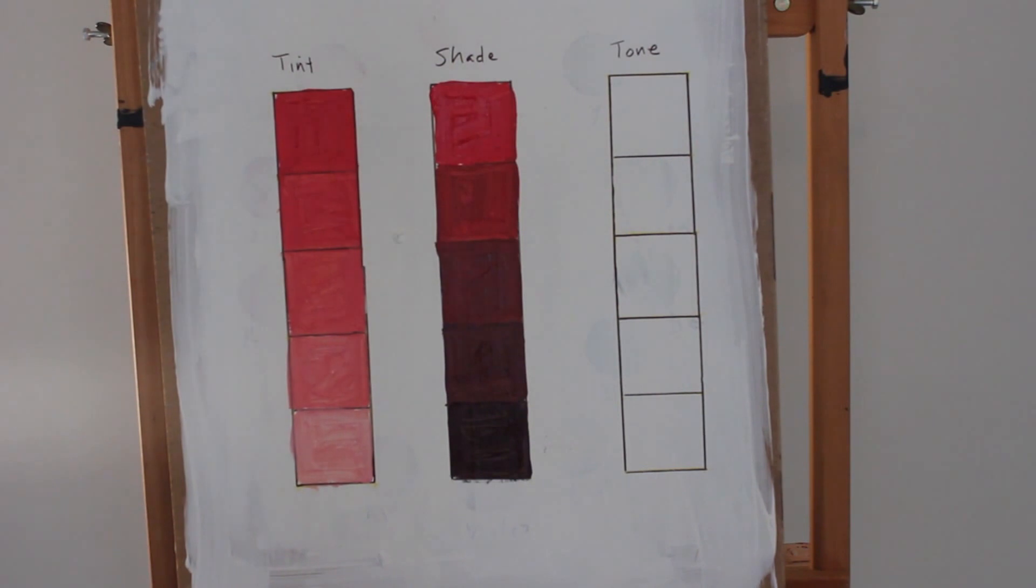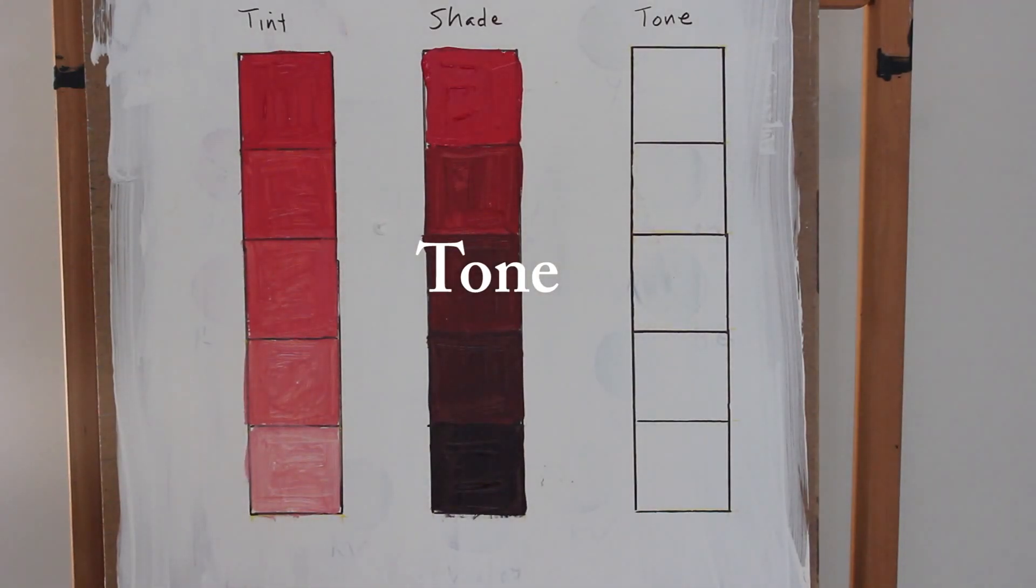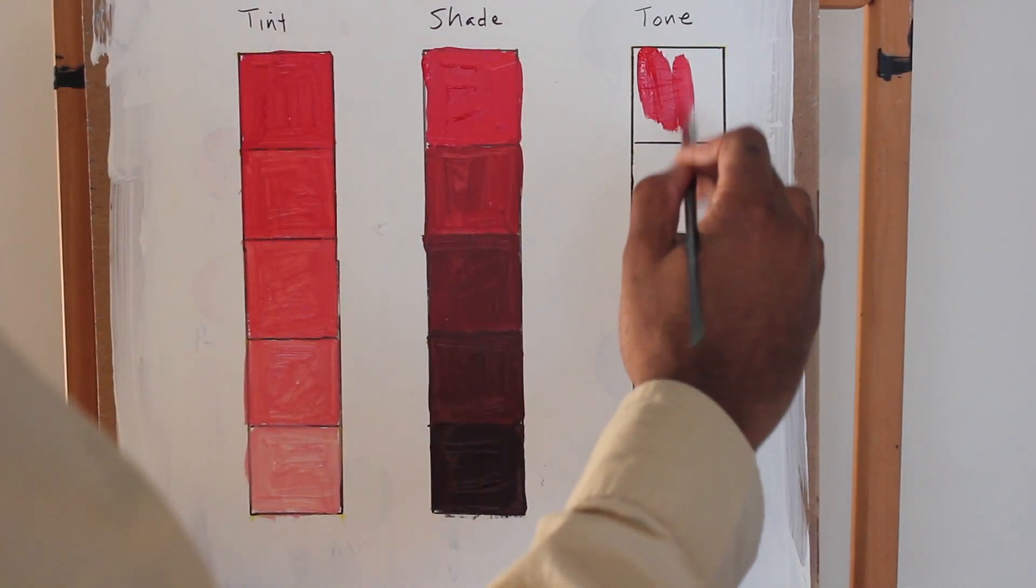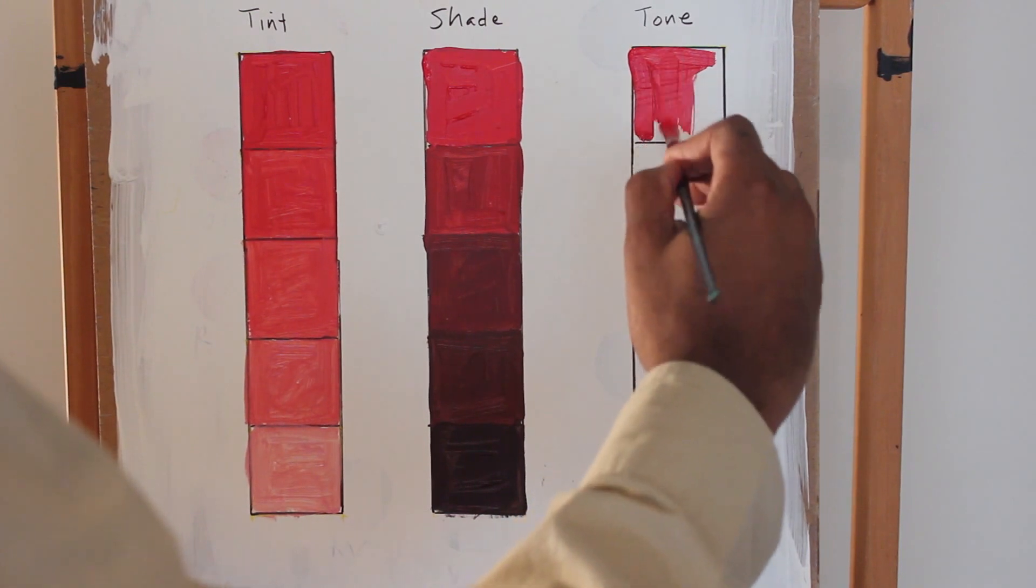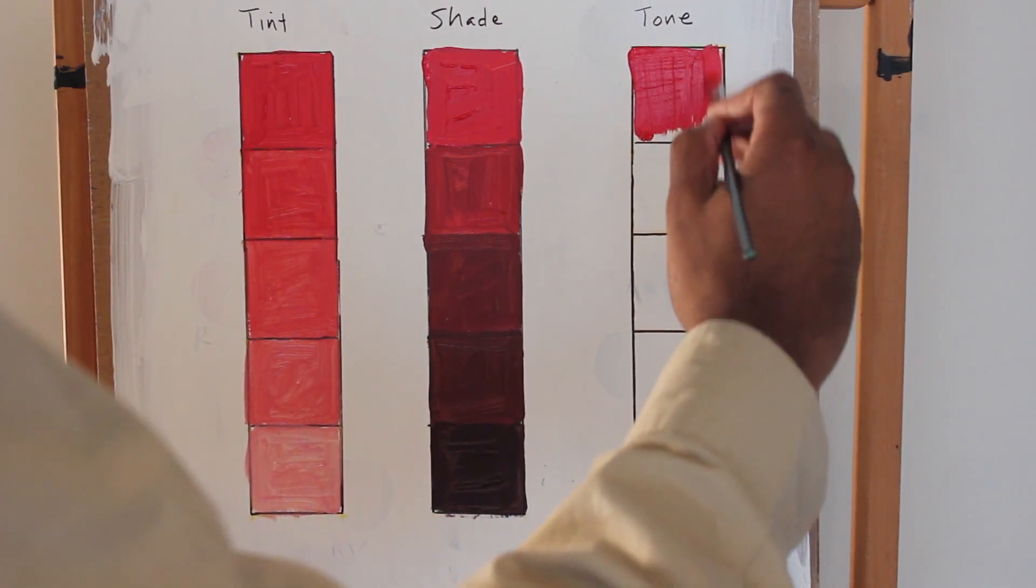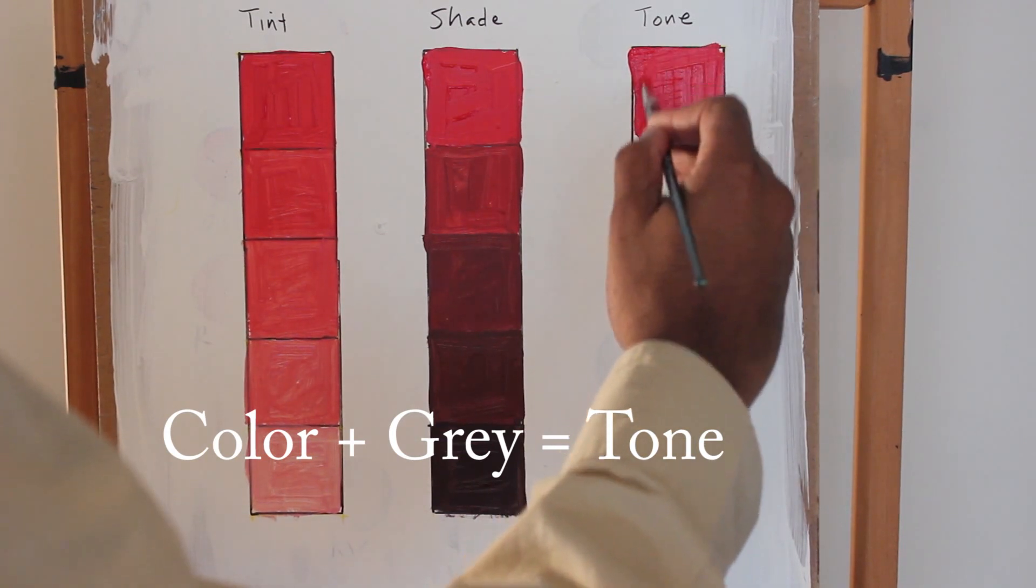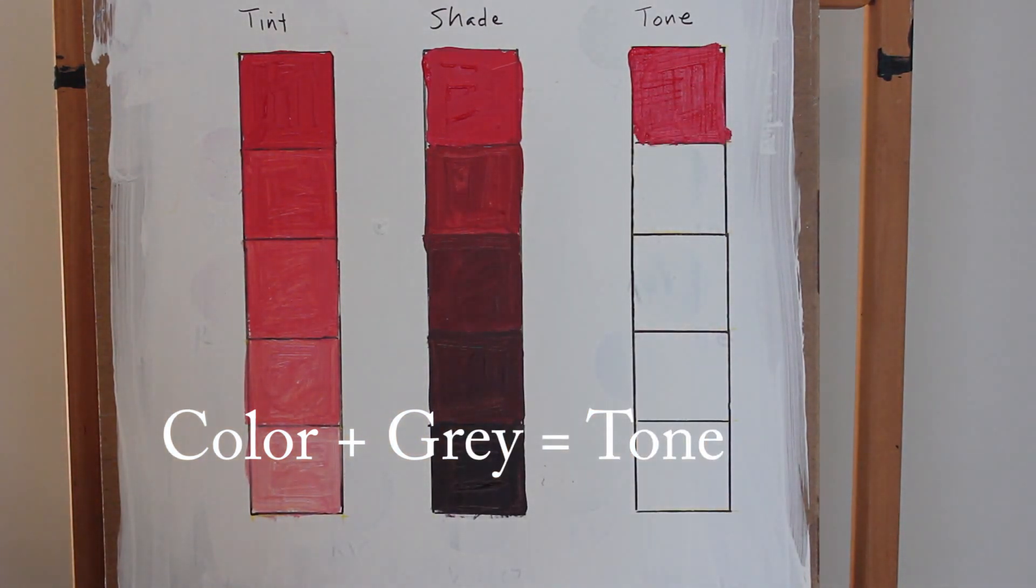I'm going to explain a little bit of that more in the next lesson. All right, we're going to go ahead and move on to tone. I want to start with my first square and I'm going to move my way down just like I did with the other two columns, with the tint and the shade. Basically, tone is adding color with gray, and you get a tone. You have tint equals white, shade equals black, and tone equals gray.